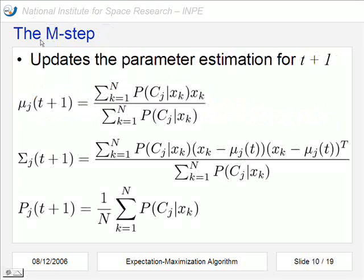And now the M-step is the second part, which updates the parameter estimation for the next time. Here is the way to calculate the mean, here is the way to calculate the covariance matrix, and here is the way to calculate the probability of occurrence of each class.